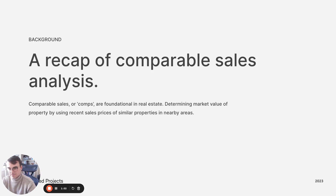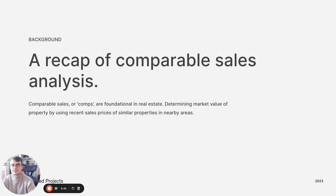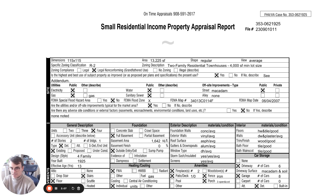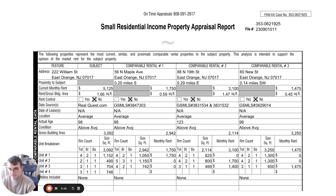Let's begin with something familiar: comparable sales. It's an analysis in real estate often called comps. It's a method used to estimate the value of a property by comparing it to similar properties. We identify properties that are similar in size, location, condition, and so on, and the sale prices of these comps are then analyzed to determine a fair market value for the property in question.